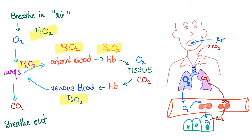Now let's name them. Oxygen, or the fraction of oxygen in the atmosphere, is FiO2. In the lung, it's PAO2 — big A for alveolar. In the arterial blood, it's PaO2 — small a for arterial. On the hemoglobin, this is oxygen saturation. CO2 in the venous blood is PVCO2, or PVO2 if you want to measure oxygen in the veins. It goes to the lung as CO2.